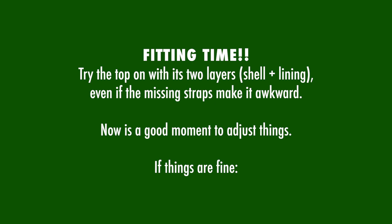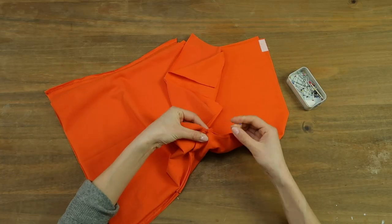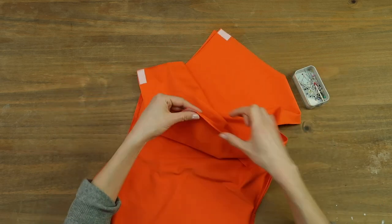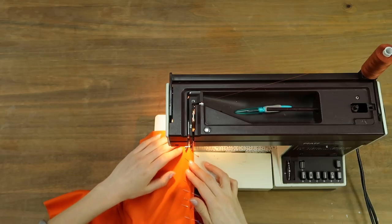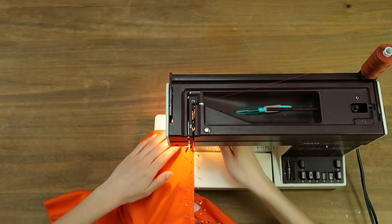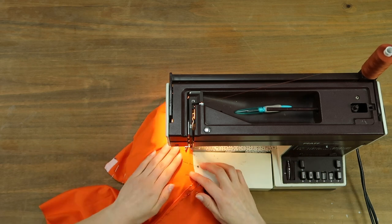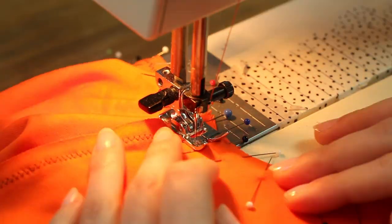I'm going to pin the two bodices around the armhole. You want to flatten the seam allowances in opposite directions. I personally like to add lots of pins, so here they are. I start with straight stitches for about three centimeters, then I switch to zigzag stitches, and then when I reach the opposite neckline, back to straight stitches about three centimeters before the end.